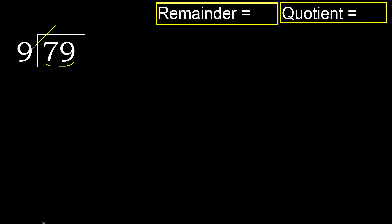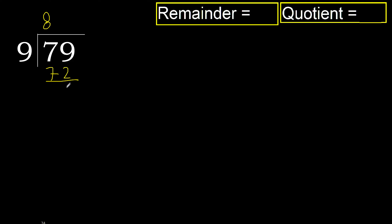79 but not greater. 9 multiplied by 9 is greater. Multiplied by 8: 72 is not greater. Subtract — 7.